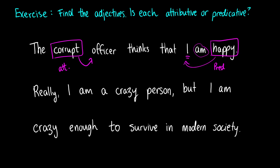You can tell if it's predicative because it's not occurring immediately before the noun that it's describing. Okay, next one. Really, I am a crazy person. So crazy here is describing person. So this is an attributive adjective. You might be thinking, hold on a second. Here's I and there's crazy. Why isn't this predicative? Well, actually, a crazy person, that entire thing is describing I. But the adjective itself, crazy, is describing person. So that's why it's not predicative here.